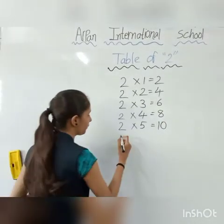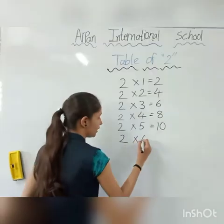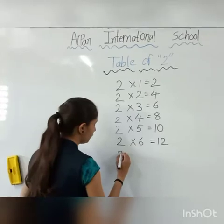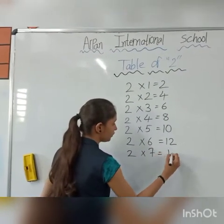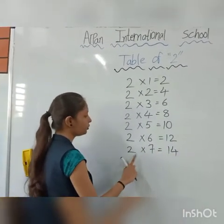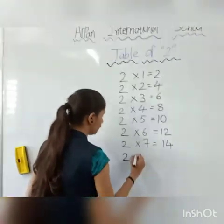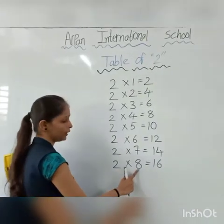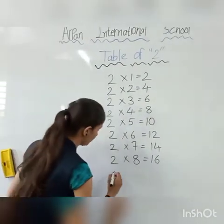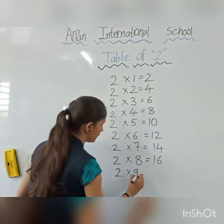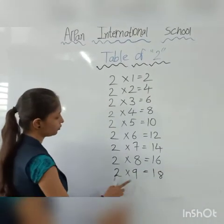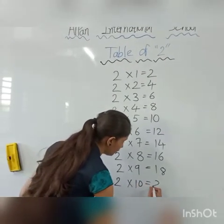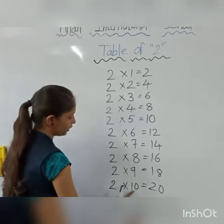Now follow. 2, 6's are 12. 2, 6's are 12. 2, 7's are 14. 2, 7's are 14. 2, 8's are 16. 2, 8's are 16. 2, 9's are 18. 2, 9's are 18. 2, 10's are 20. 2, 10's are 20.